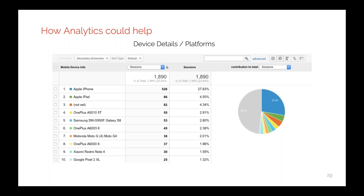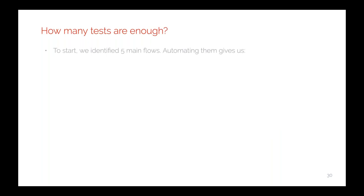The list goes on — I can see what types of devices people are using and from what platforms they're accessing the site. The main point is that many times we feel blind about what to test and what platforms and browsers to cover. But almost all the time, websites have analytics plugged in, and we can use this information to create a better testing strategy.